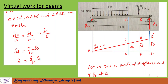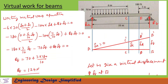From these similar triangles we can write: delta_B / 10 = delta_D / (10 − 3) = delta_C / 6. From this equation we find delta_D and delta_C in terms of delta_B: delta_D = (7/10) × delta_B, and delta_C = (6/10) × delta_B.